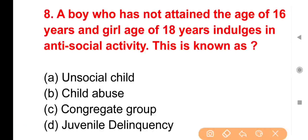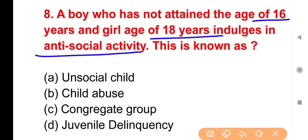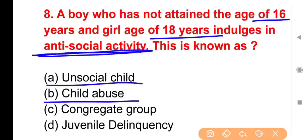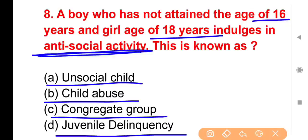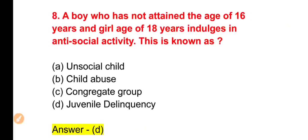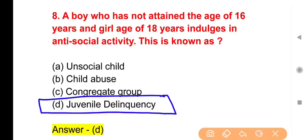Question 8: A boy under 16 years of age or a girl under 18 years of age involved in anti-social activity — this is known as? Options: Unsocial Child, Child Abuse, Conquerigant Group, Juvenile Delinquency. The right answer is Option D — Juvenile Delinquency. Minors under 18 involved in crime are classified under Juvenile Delinquency.